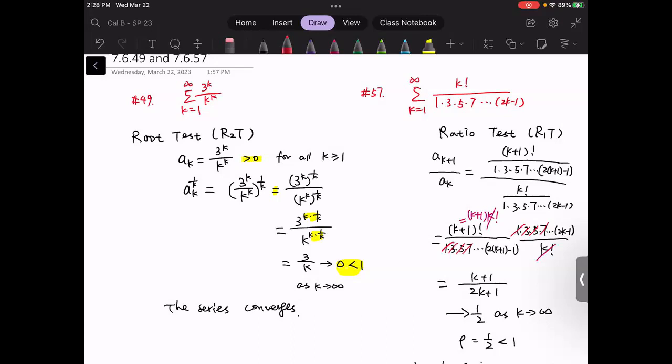And indeed, this 2k+1 will also be cancelled by the term before this one. And the last term that will be left here should be 2(k+2)-1. This is also 2k+1.